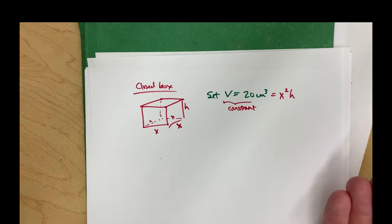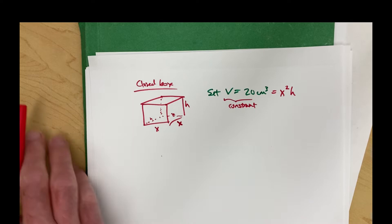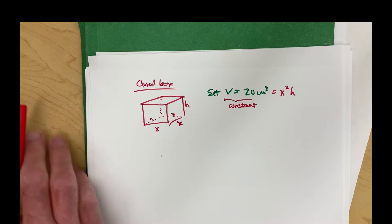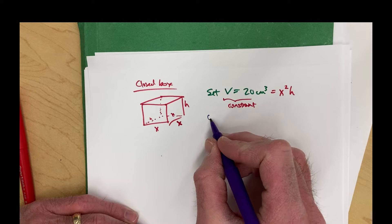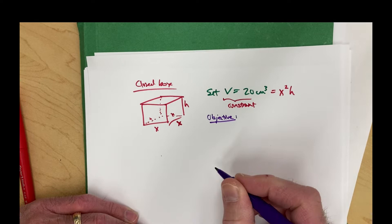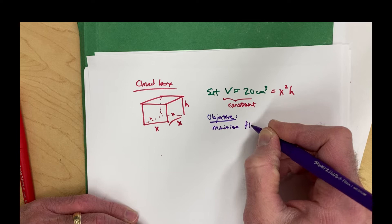For example, if x was the square root of 20 and h was 1, that would work. If x was 1 and h was 20, that would work. The volume constraint is not the thing we're trying to minimize. If you look at the directions, it says minimize the surface area — that's sometimes called the objective function. Our goal is to minimize the objective function, which I'll call f of x or the surface area.